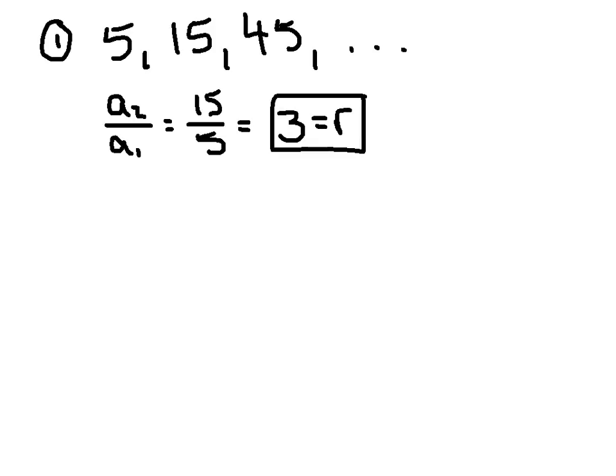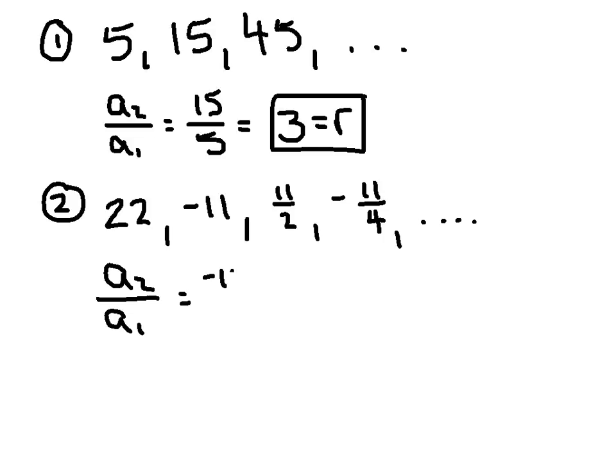The second example: 22, negative 11, 11 halves, negative 11 fourths. What are we multiplying by each time? You'll notice the alternating signs - we went from positive to negative to positive to negative, which implies that my R value is going to be negative. If you're having trouble, just keep it simple: take your second term, divide it by your first term, reduce that answer, and there it is - your R value or common ratio.